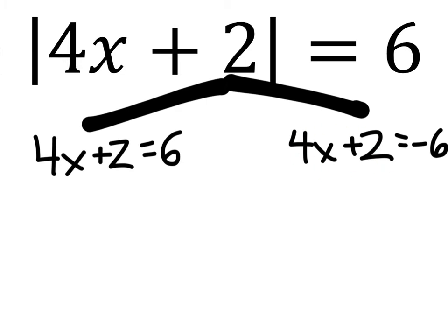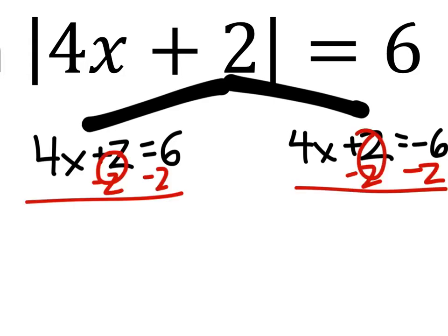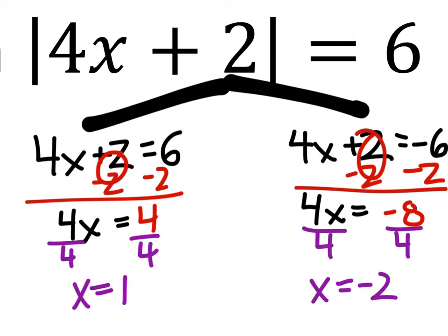Let's go ahead and solve. We're going to subtract 2 from both sides. And yes, I'm doing these simultaneously. I hope that's okay. And then, finally, we would divide both sides by 4. And there we go. We have our answers there.